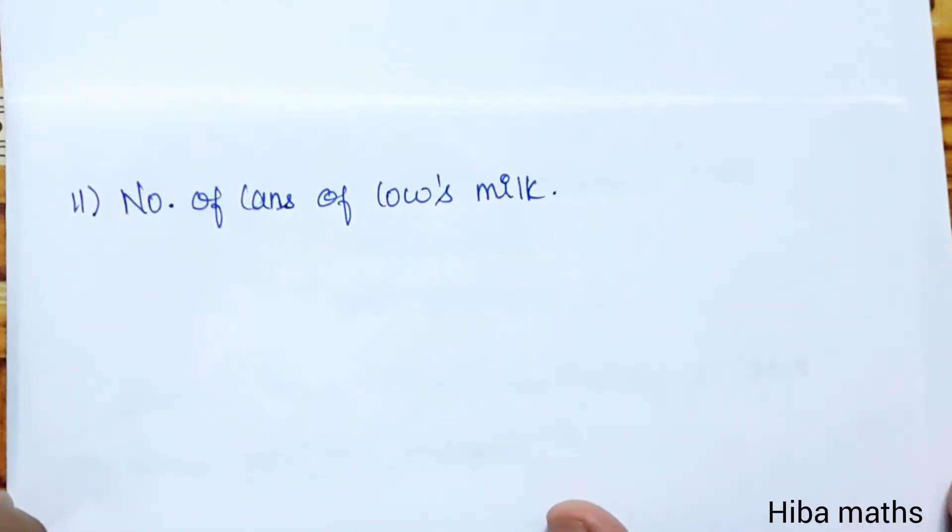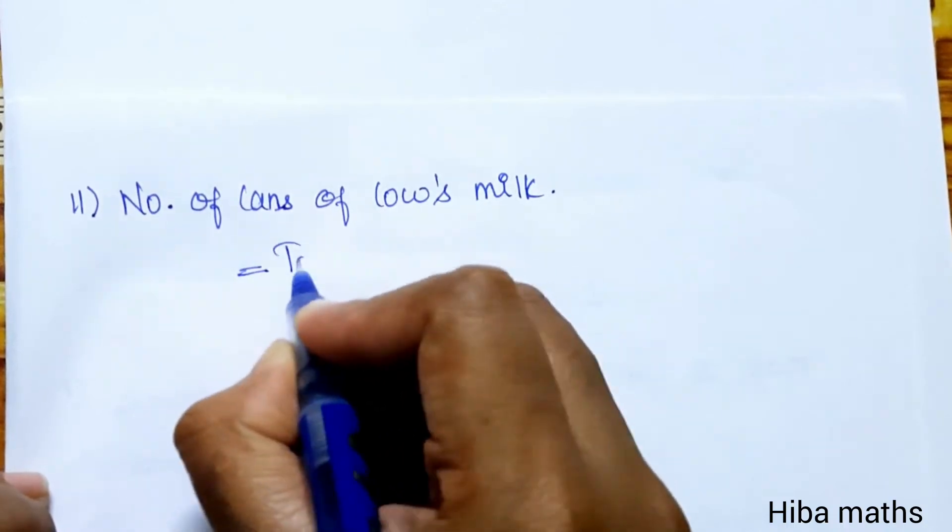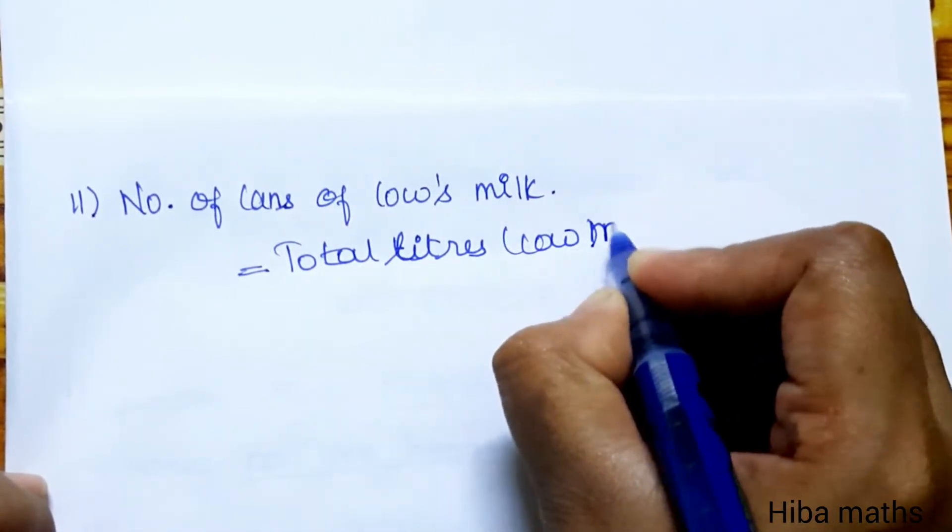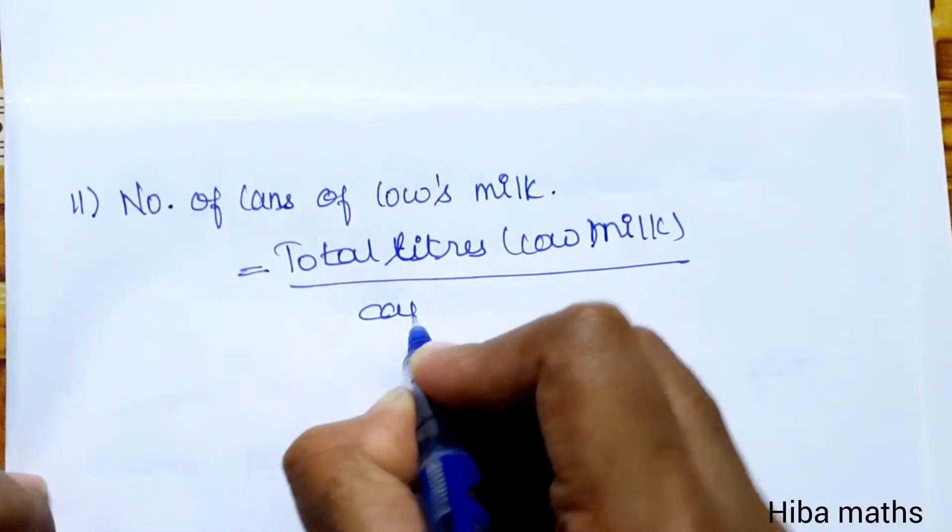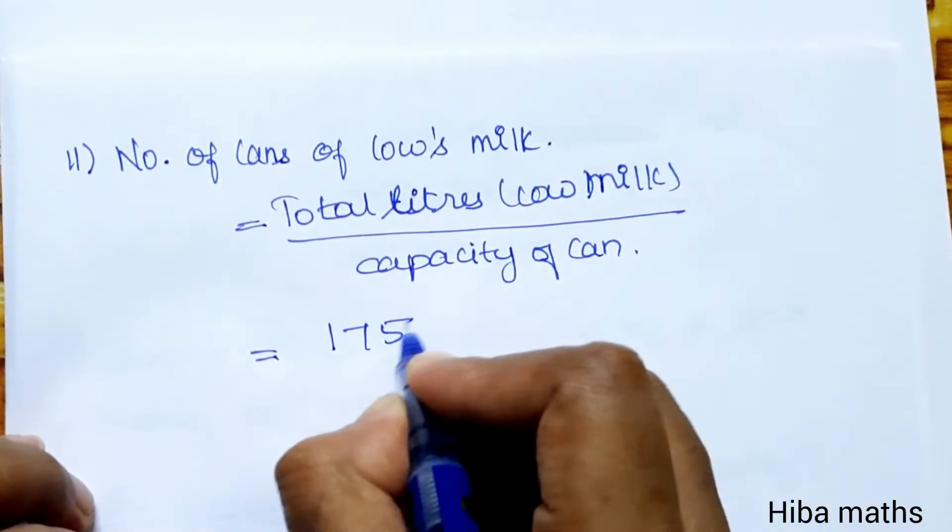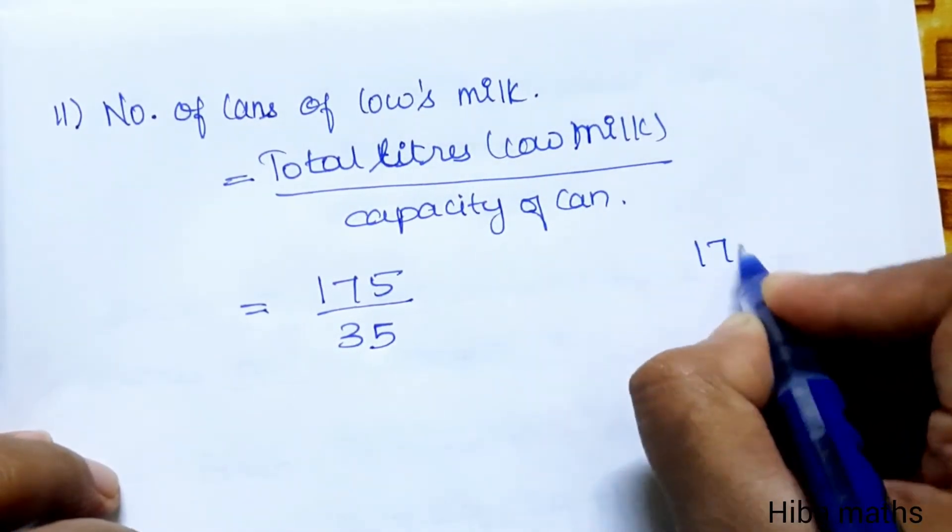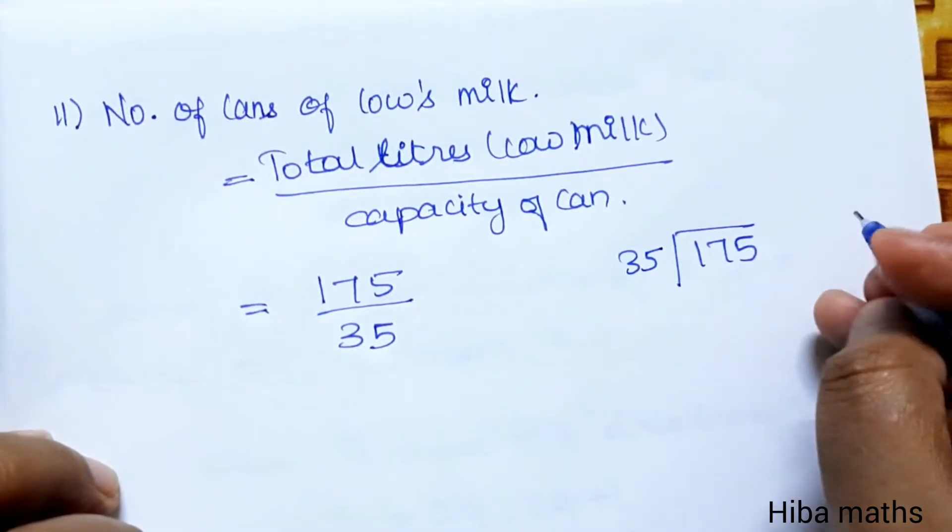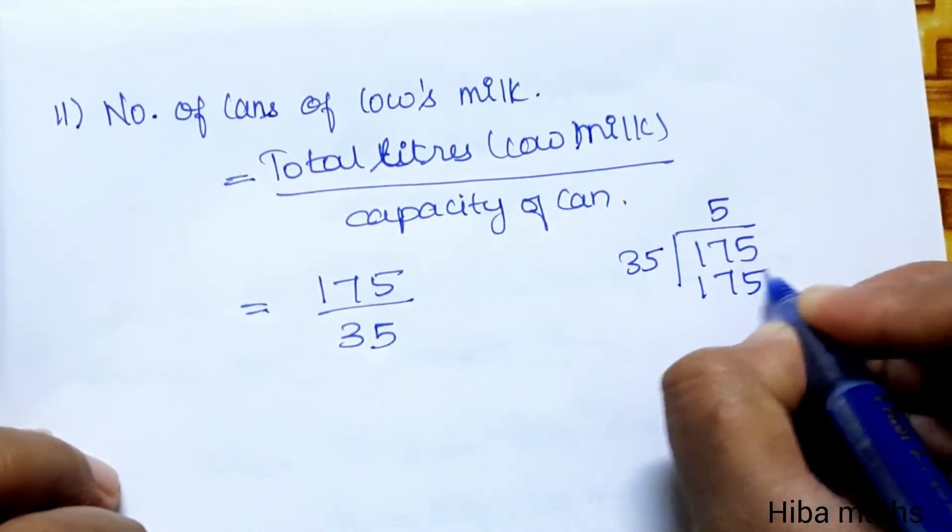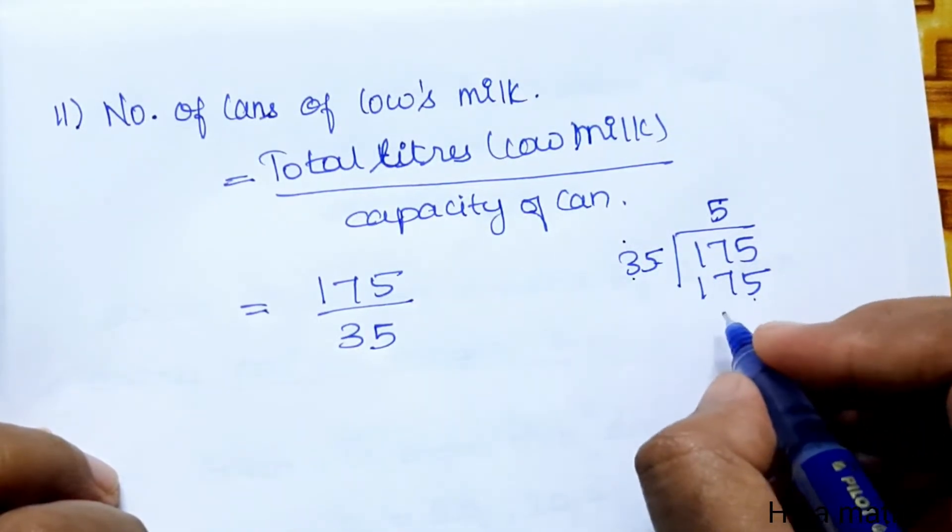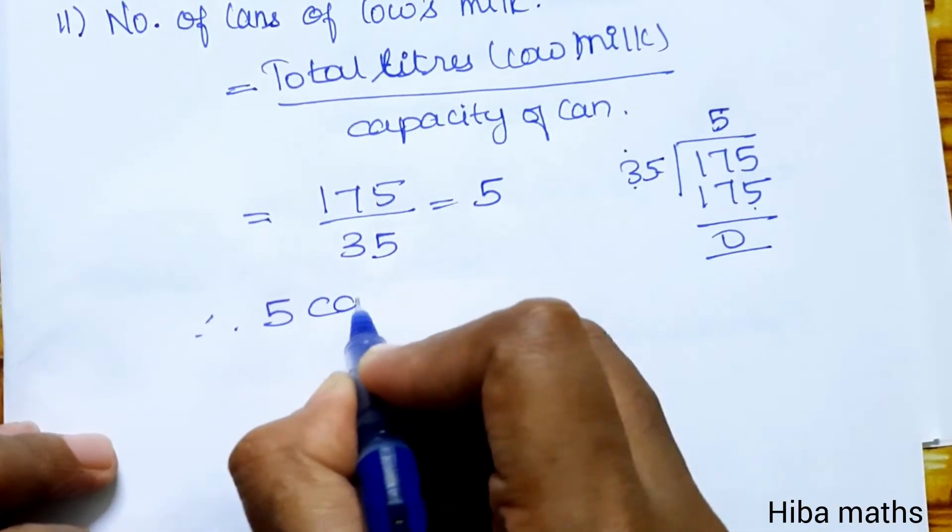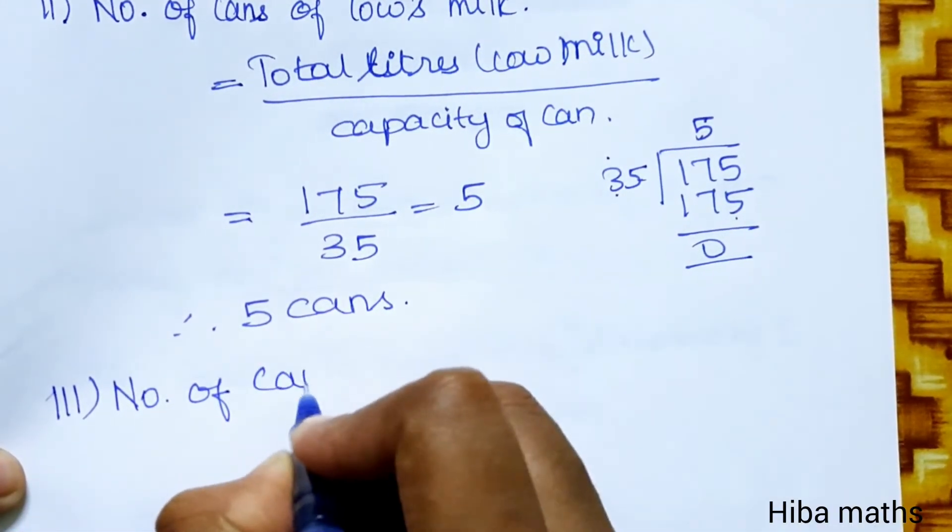Second question: number of cans of cow's milk. Total liters of cow's milk divided by capacity of can equals 175 divided by 35. 35 times 5 equals 175. Therefore, 5 cans for cow's milk.